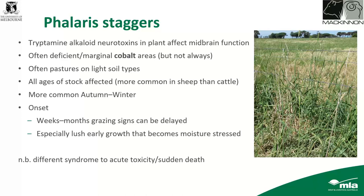So that's enough on ryegrass staggers. Moving on to phalaris staggers — it's caused by tryptamine alkaloids, neurotoxins which affect mid-brain function. We often see it in deficient or marginally deficient cobalt areas, but not always — it doesn't have to be cobalt-deficient country. It tends to occur more commonly on lighter soil types such as sandy or limey soils, though it can occur on heavy soils too. All ages of stock are affected; you get it more with sheep than cattle, but cattle can certainly get severe staggers. It mostly develops in autumn going into winter, and the onset can take weeks to months after grazing the toxic pasture.